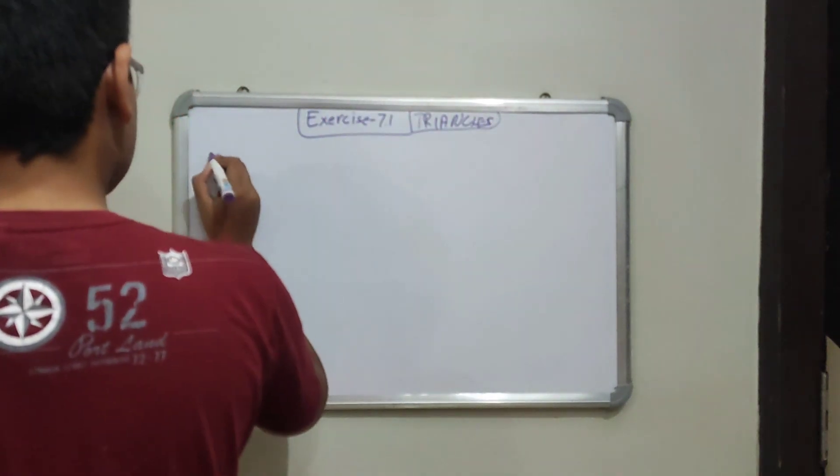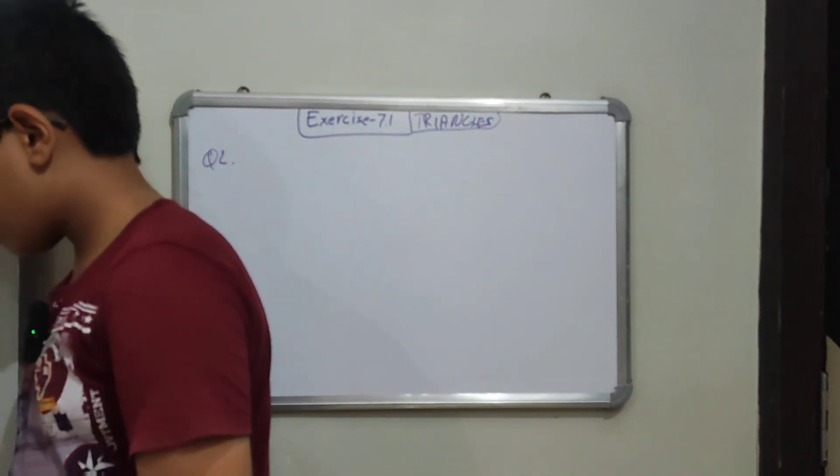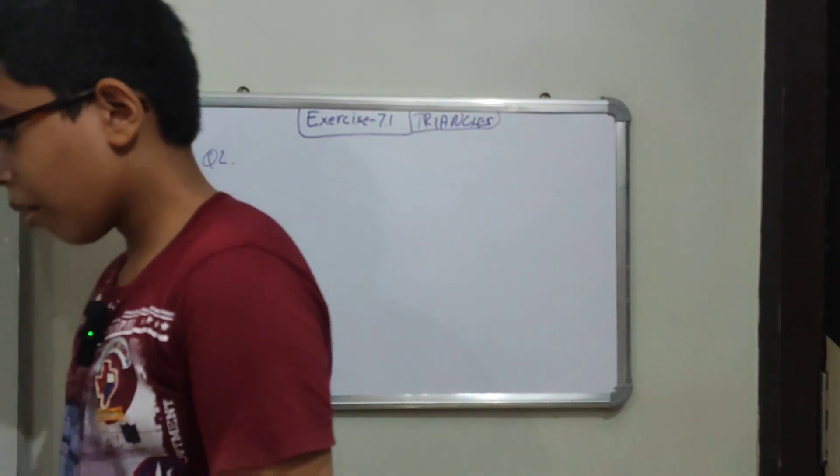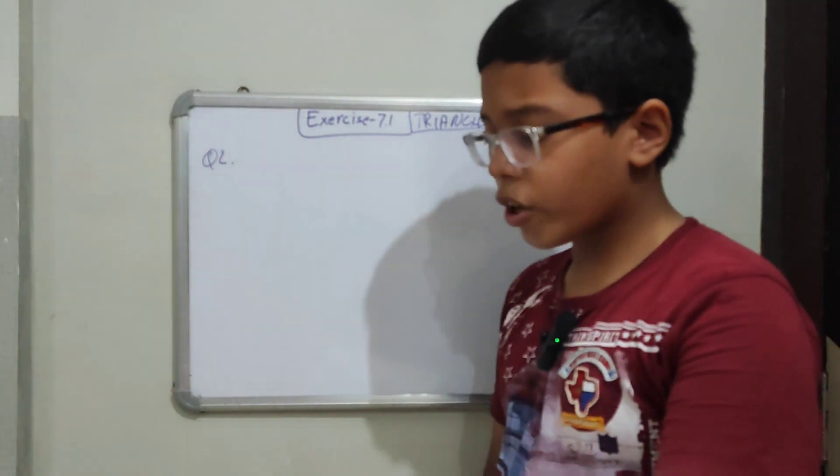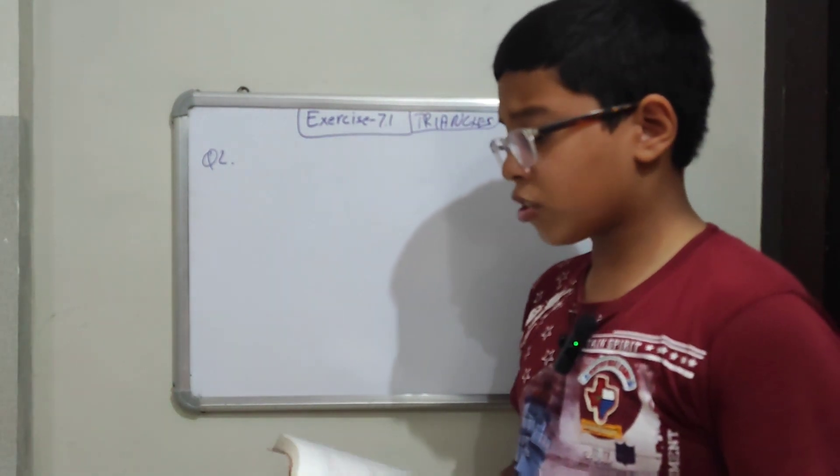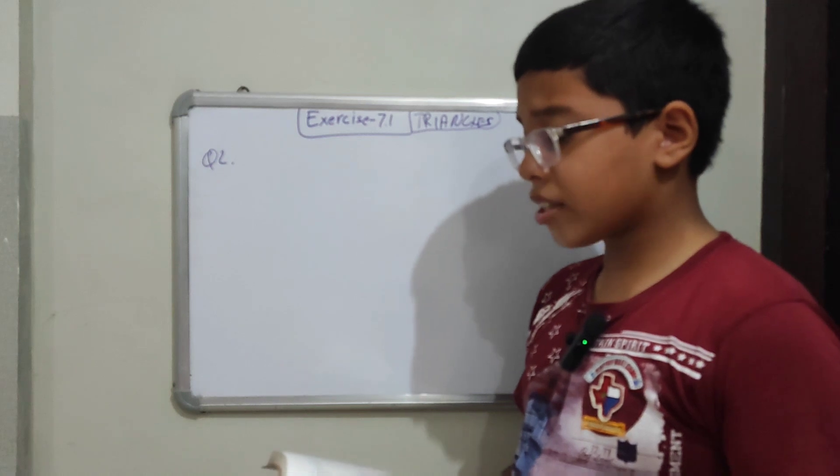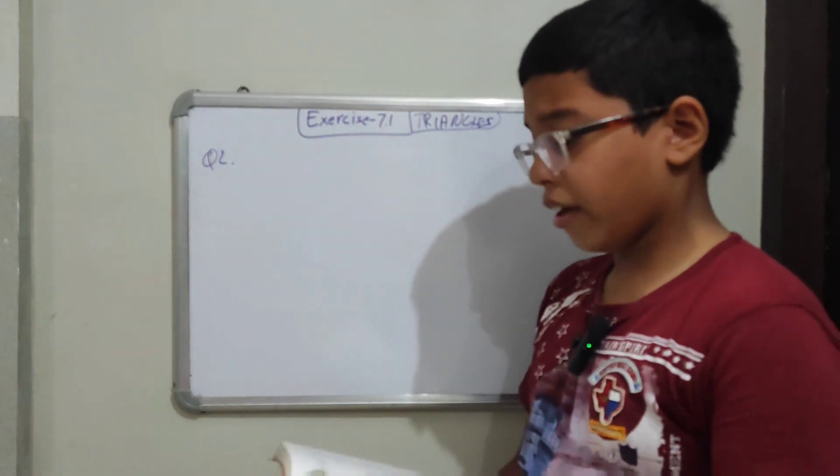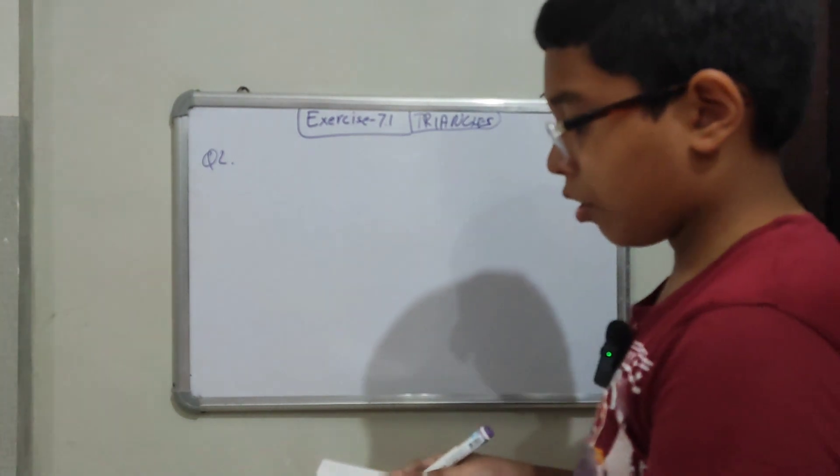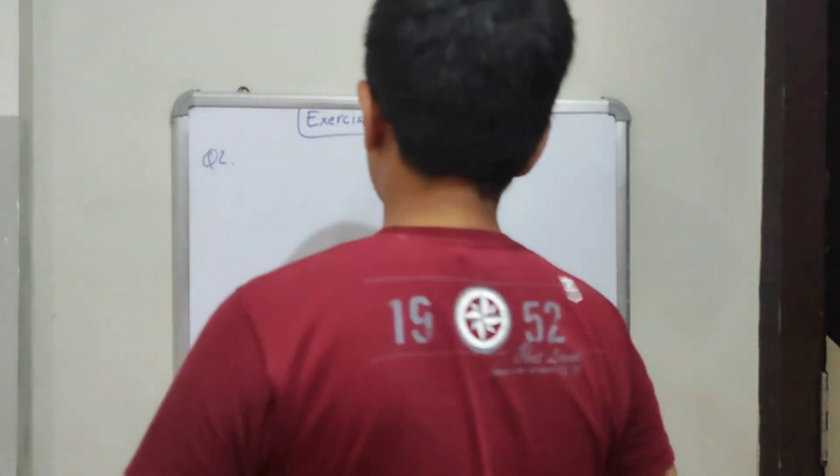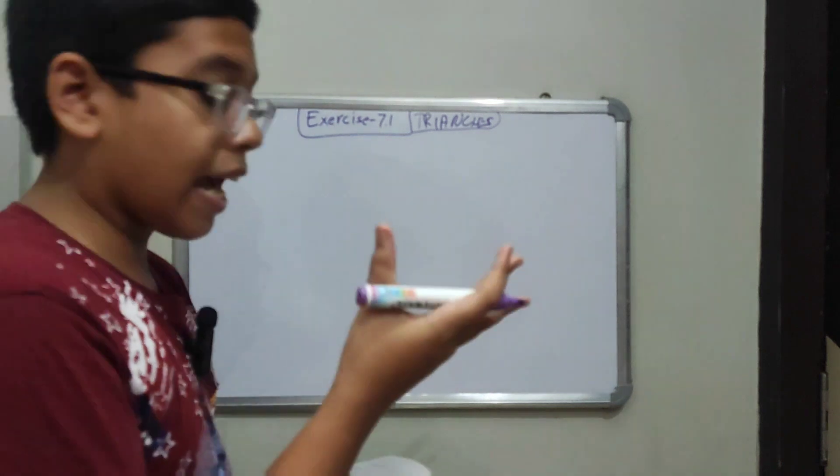Let's start from question number 2. I will write the book here. It is written that ABCD is a quadrilateral in which AD equals BC and angle DAB equals angle CBA. See figure 7.17. Prove that. So guys, I will draw and show you what the next question is.